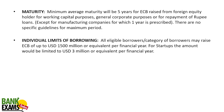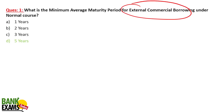Aur maturity period — jo minimum maturity hai, yeh 5 saal ki honi chahiye, kam se kam 5 saal — working capital ke loan ke liye, general corporate purpose ke loan ke liye, ya rupee loan repayment ke liye, yeh 5 saal hai. Manufacturing company ke liye yeh 1 saal hai. Toh yeh tha 5 saal — answer for minimum average maturity period.